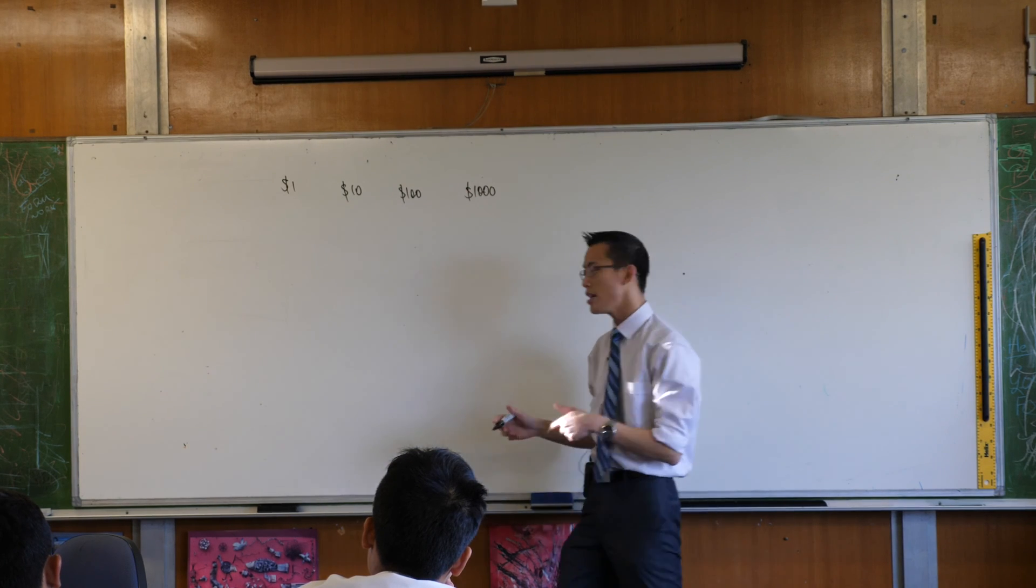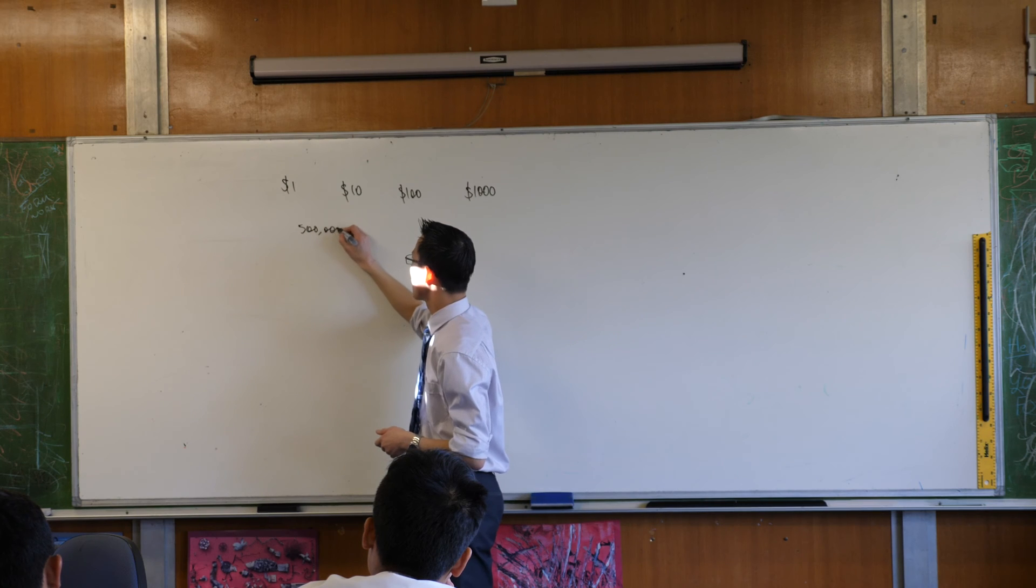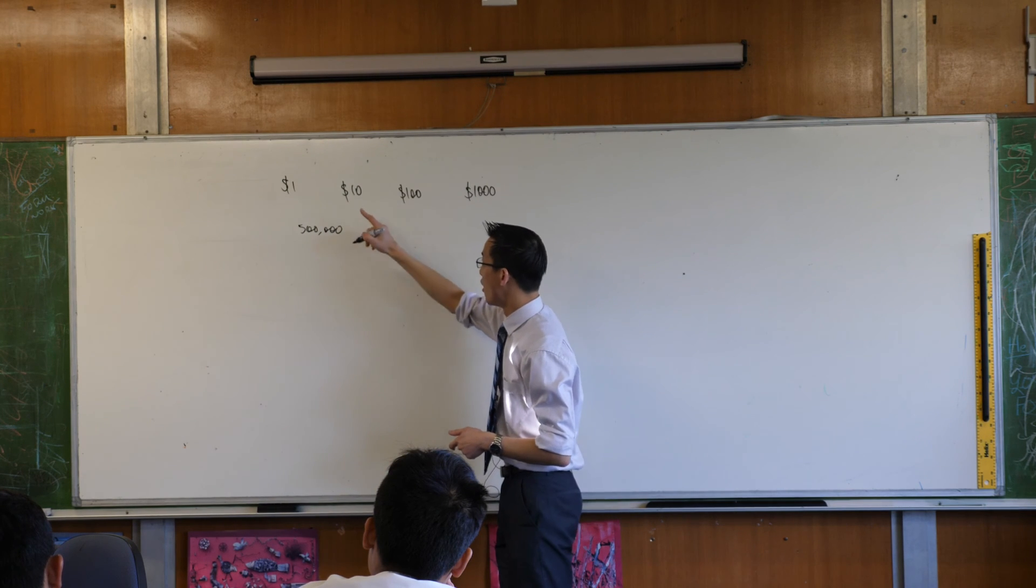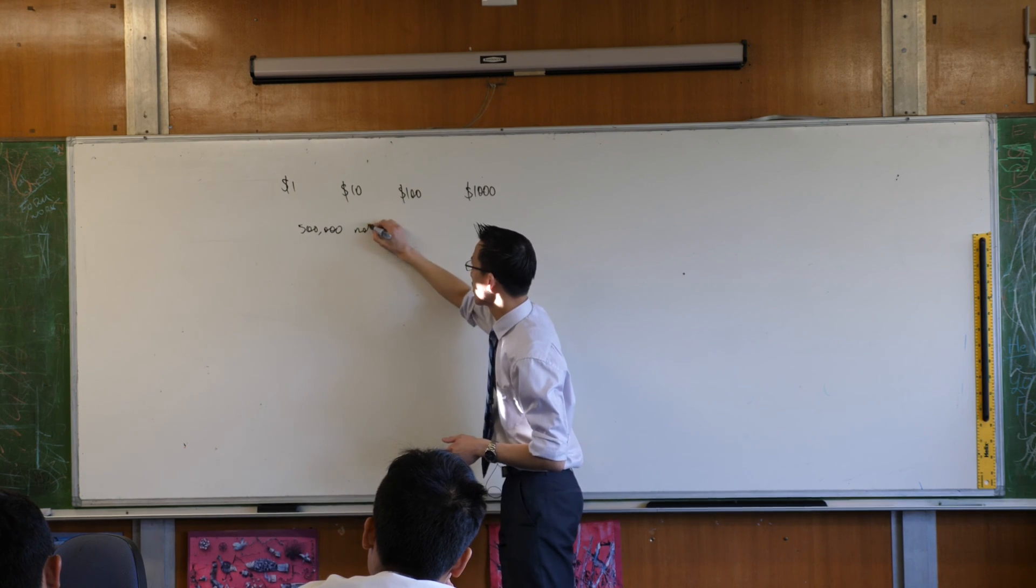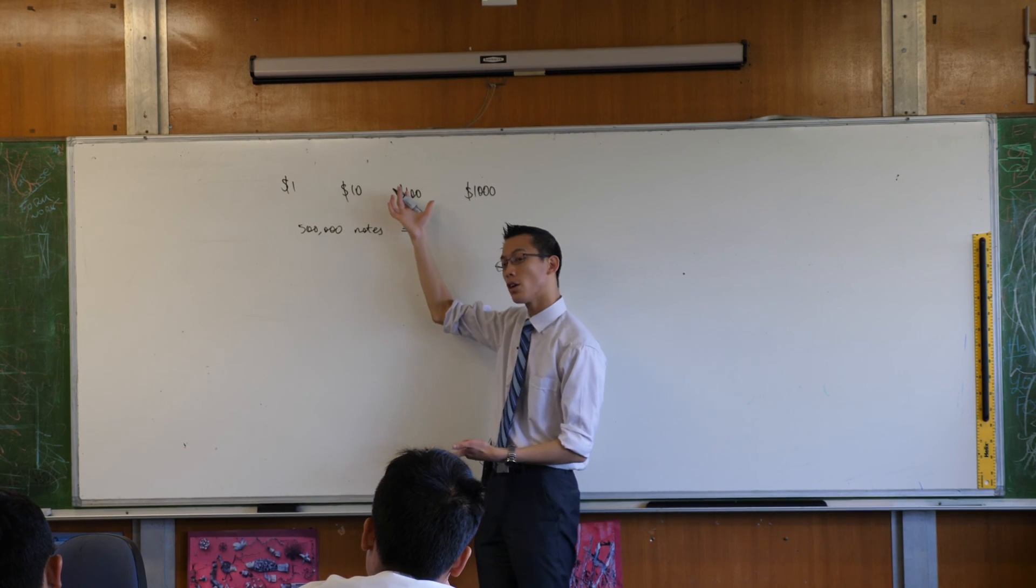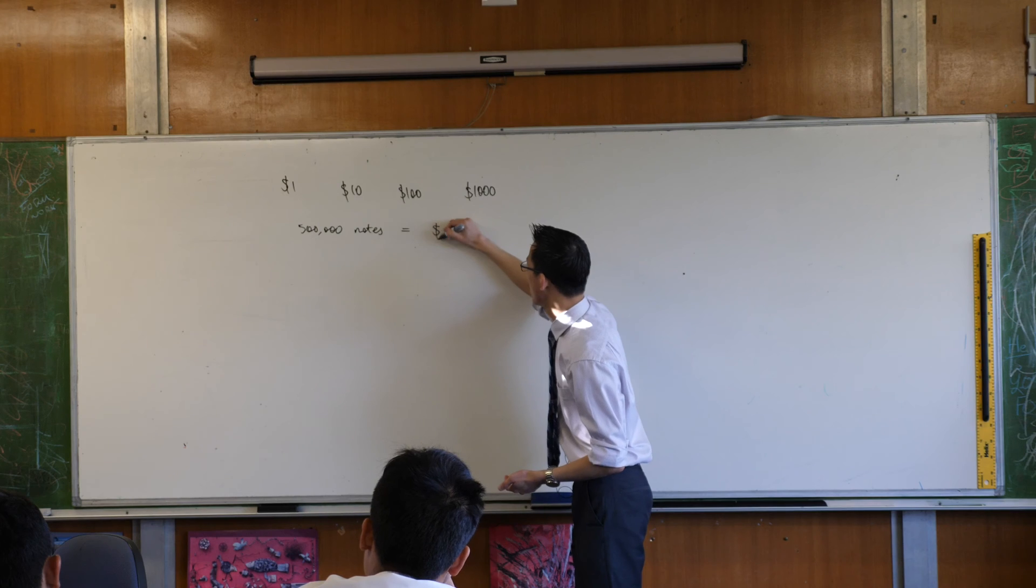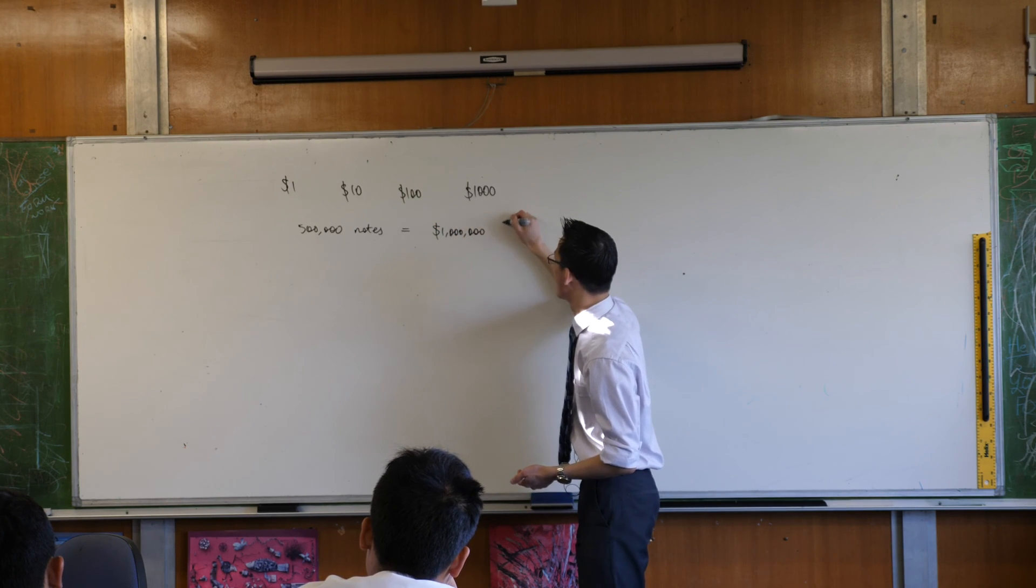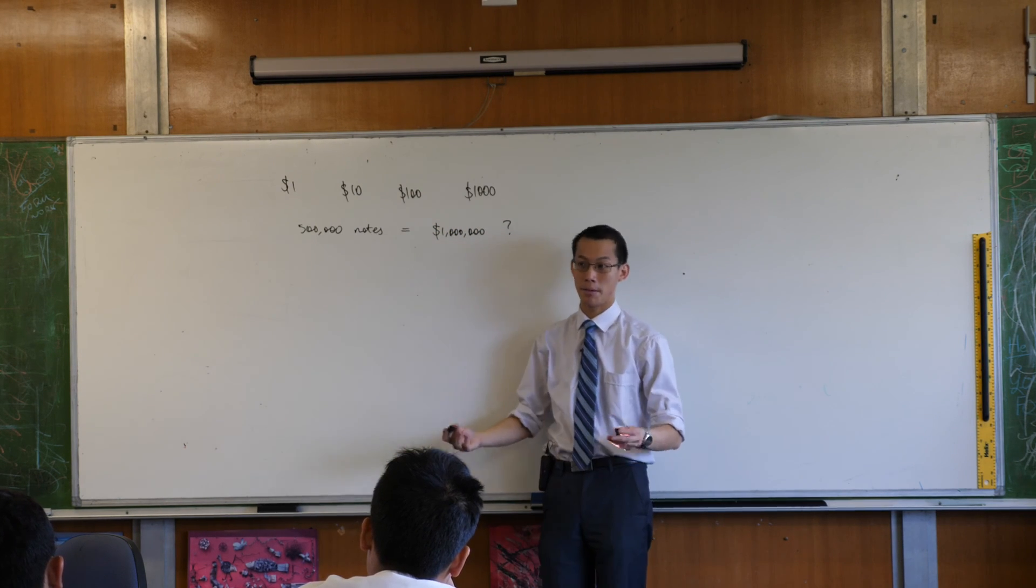So we have this country, it has these currencies, and the question is if I have five hundred thousand, that's half a million, of these notes, is it possible to get a million dollars of currency out of that? So, a million, question mark, can it be done?